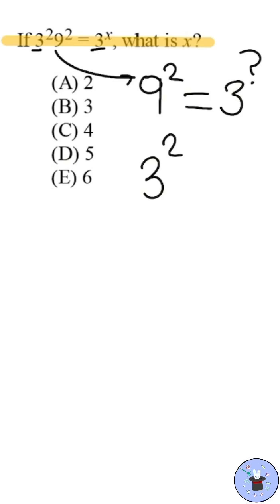Well, we know 3 squared equals 9, so we can substitute 3 squared into 9 squared to get 3 squared squared.